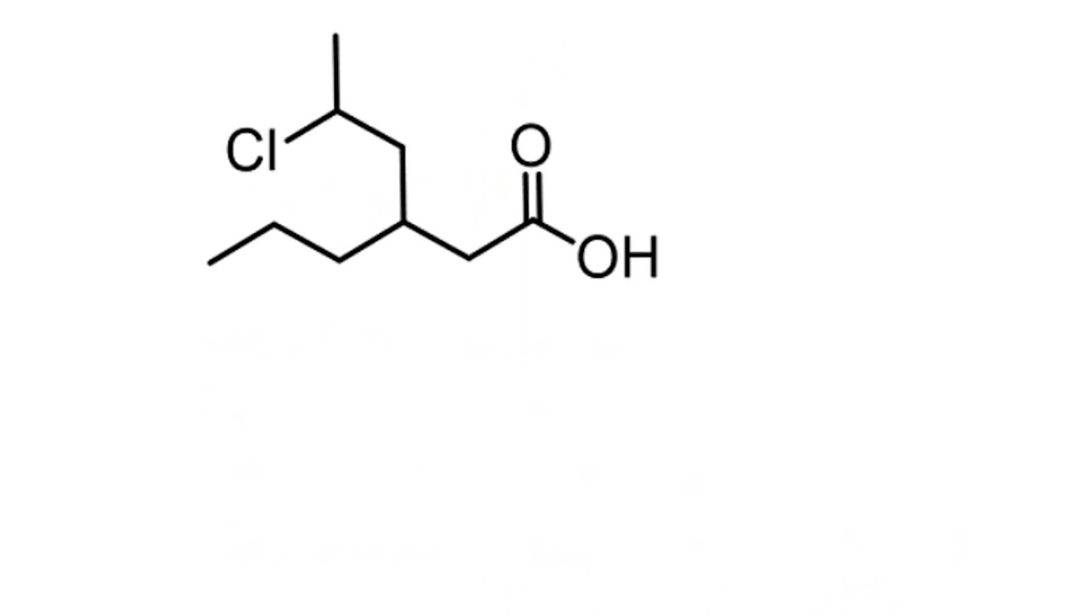Now let's look at another skeletal formula. Here's the structure. As always, the carbon of the carboxyl group is carbon number 1. From there, we trace the longest continuous chain that includes this carbon. Counting carefully, we find 6 carbons, so the parent name is hexane.